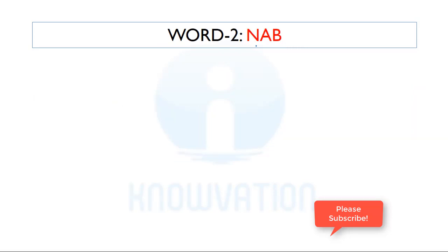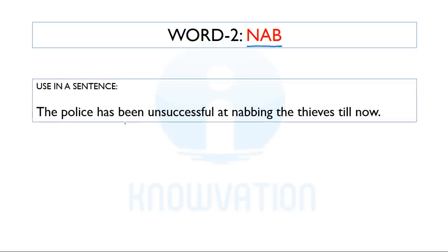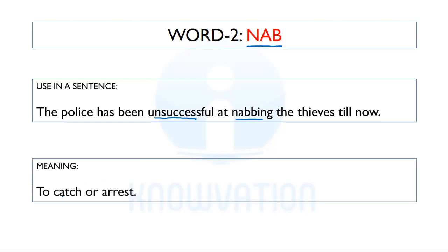The second word for today is Nab — N-A-B. Let's see its use in a sentence. The police has been unsuccessful at nabbing the thieves till now. So the police is trying to nab the thieves but has been unsuccessful. The meaning of nab is to catch or to arrest. This word is mostly used in contexts where someone is trying to run away and the police is trying to grab them.